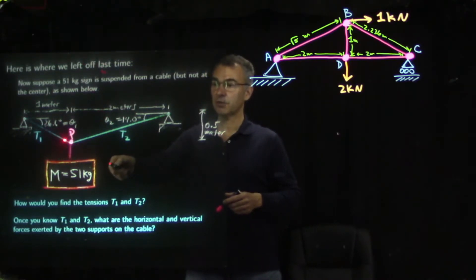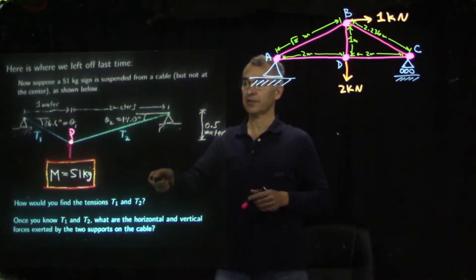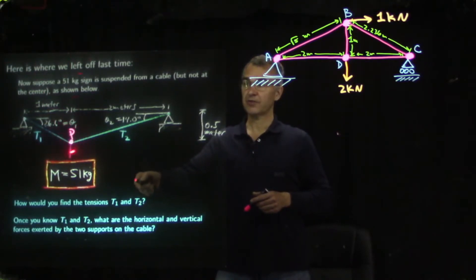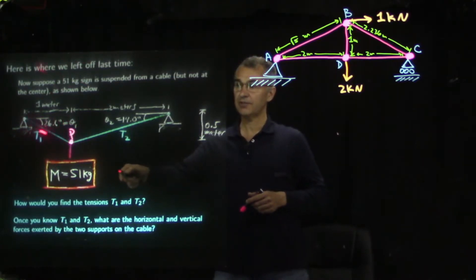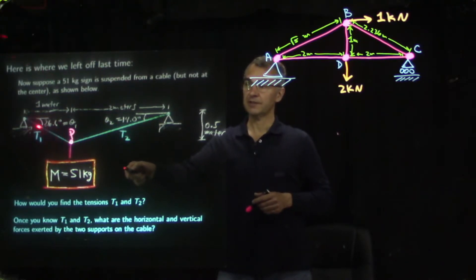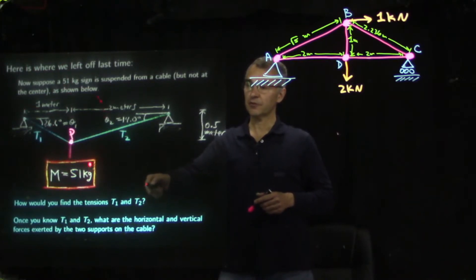There was no torque equation because all of the forces pass through this one point, so if we use this point as the pivot, every torque would be zero. The torque equation tells us nothing in this case. But we summed all the forces horizontally to zero and vertically to zero acting on point P. When we analyze a truss, this point P is an example of what we call a joint, and these tensions are examples of what we call bar forces — they can be either tension or compression.